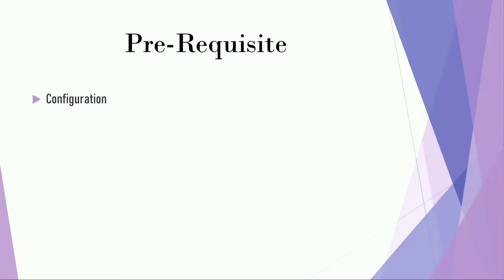Before moving on to the implementation, there are some configurations you need to perform to access the queue item component from the orchestrator. I've already created a video on how to do that configuration, and you can find the link in the description box below. Once you have done the configuration settings, you are good to go to edit or update the queue item.